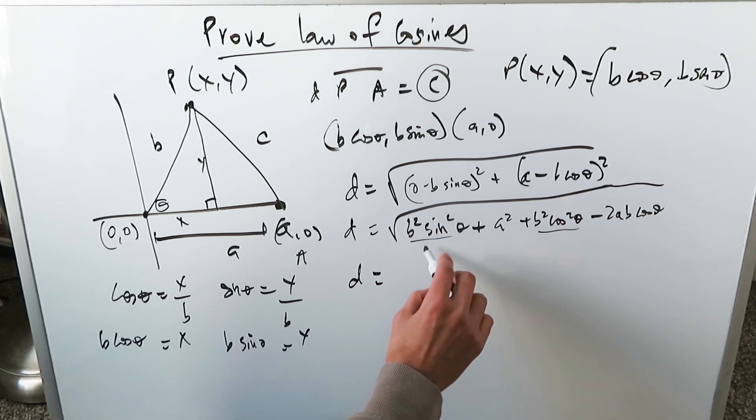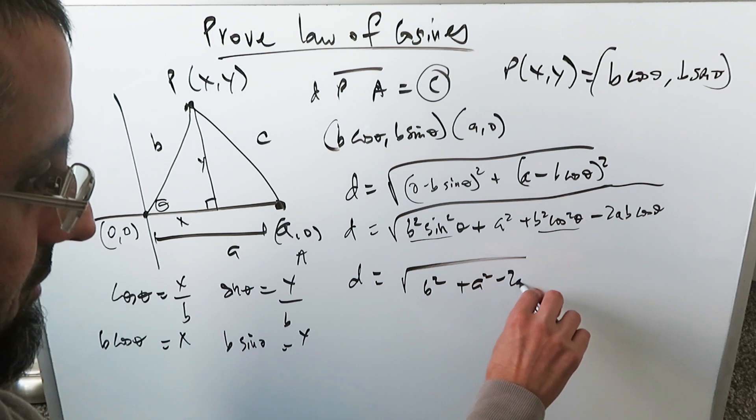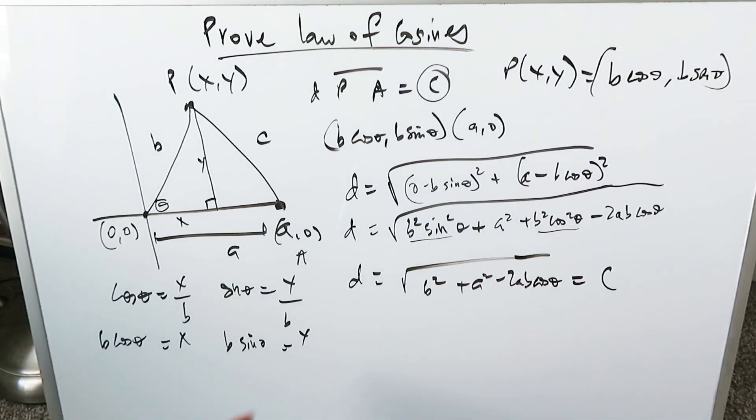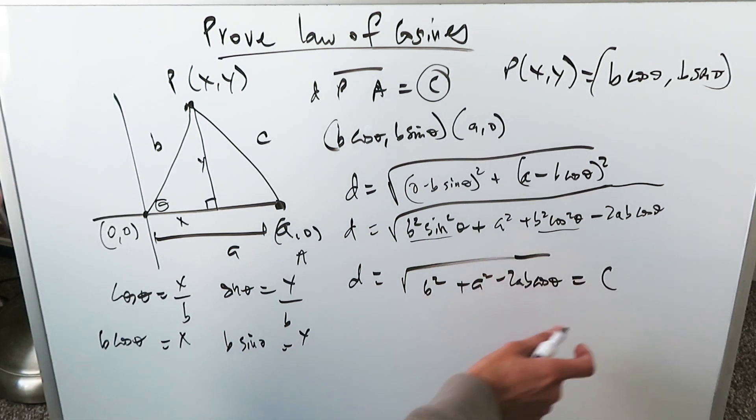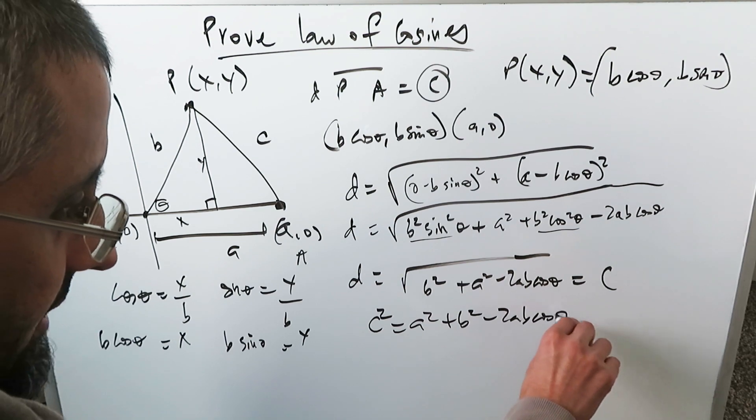Your distance segment is going to be, well, you have a b square in the root. And you have an a square. And then you have a 2ab cosine theta. You know all of this is equal to the length of the segment c. Take the square root on the other side. c square is equal to a square plus b square minus 2ab cosine theta.